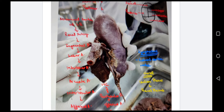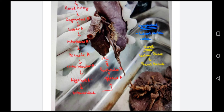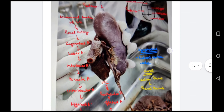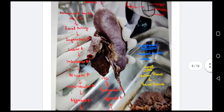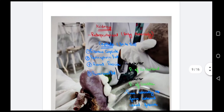A mnemonic to remember: LIA — Lobar, Interlobar, Arcuate — then interlobular and afferent. Venous drainage is the same sequence reversed. Nerve supply is from the renal plexus, which is a branch of the celiac plexus. Lymphatics drain into the lateral aortic lymph nodes.